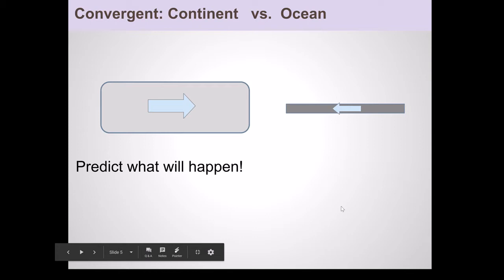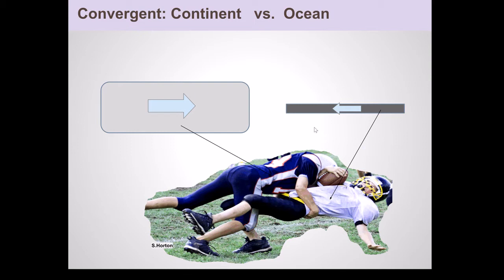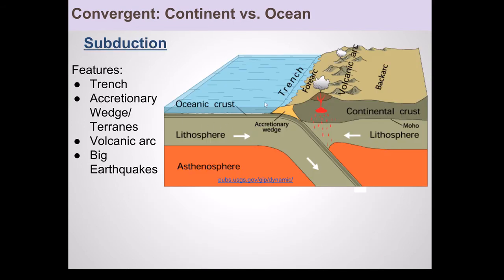Here is the first scenario: continental crust versus oceanic crust. The oceanic crust, depicted here by the guy with the football, would be subducted below the continental crust. Some of the features you see when continent and ocean converge include a deep ocean trench from where the oceanic plate is being subducted, and an accretionary wedge — material that has been smeared onto the side of the continent. This can be anything from ocean sediments to microcontinents and islands.